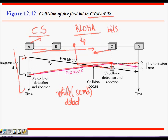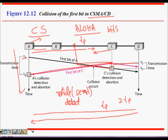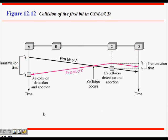In the worst case, A and D are the farthest two nodes on the LAN. A starts transmitting and it takes propagation delay tp to reach D. Just as the signal is about to reach D, D senses the channel as idle and starts transmitting. There will be a collision, which is detected only at 2·tp. This 2·tp is the vulnerable period.